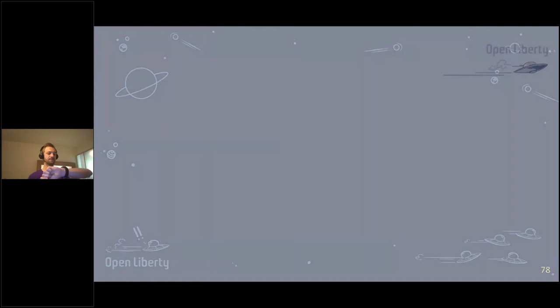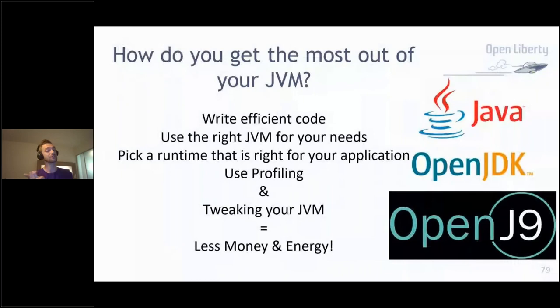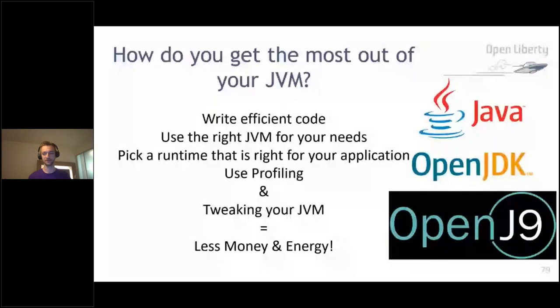A quick recap: how do you get the most out of your JVM? Write efficient code — that's definitely one of the most important things. Pick the right JVM for your needs. Pick the right runtime for your application. Use profiling — even if you're not planning to do anything with it, just have a look at what's going on underneath. And tweak your JVM. If we all make these little tweaks to our JVMs, every Java application around the world can save money for organizations — but more importantly, save energy and do our bit for the planet.